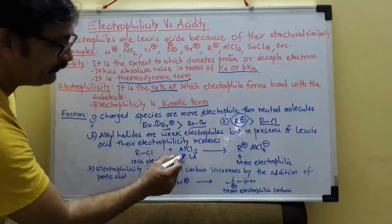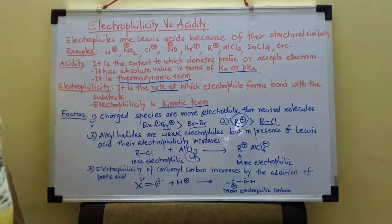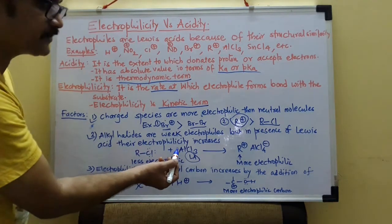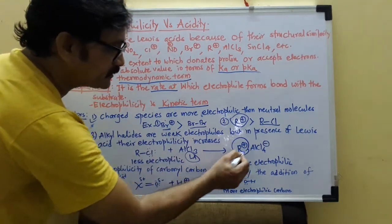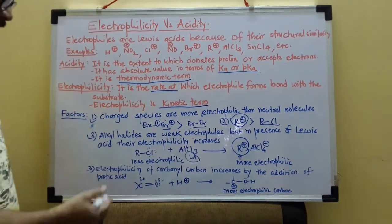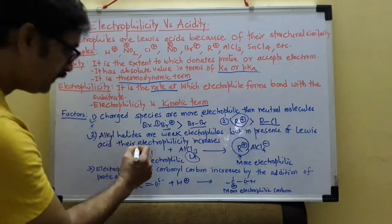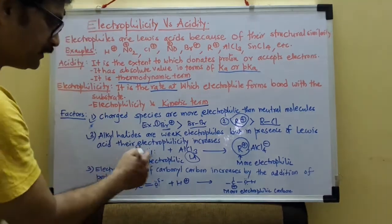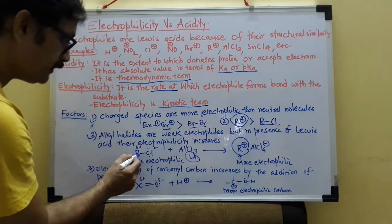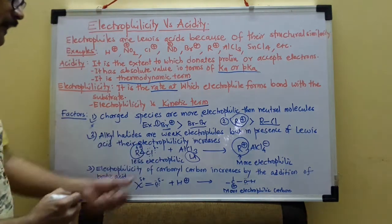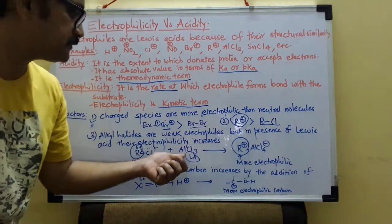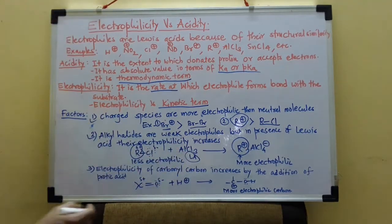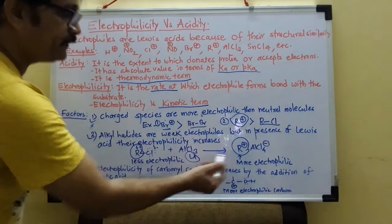But when we add Lewis acid, alkyl halide you have seen in Friedel-Crafts reaction, that bond is broken and we get this cation, this electrophile which is more electrophilic. Here there is a partial positive charge because of electronegativity difference. This is electrophilic but less electrophilic because this is complete positive charge. And this is developed because of this Lewis acid. So when we add Lewis acid, electrophilicity increases.